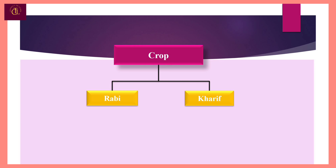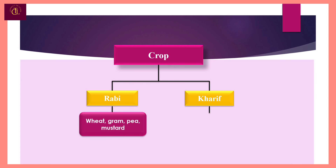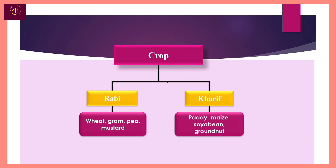In India, crops are broadly classified into Rabi crops and Kharif crops. Some examples of Rabi crops are wheat, gram, pea, and mustard. Examples of Kharif crops are paddy, maize, soya bean, and groundnut.